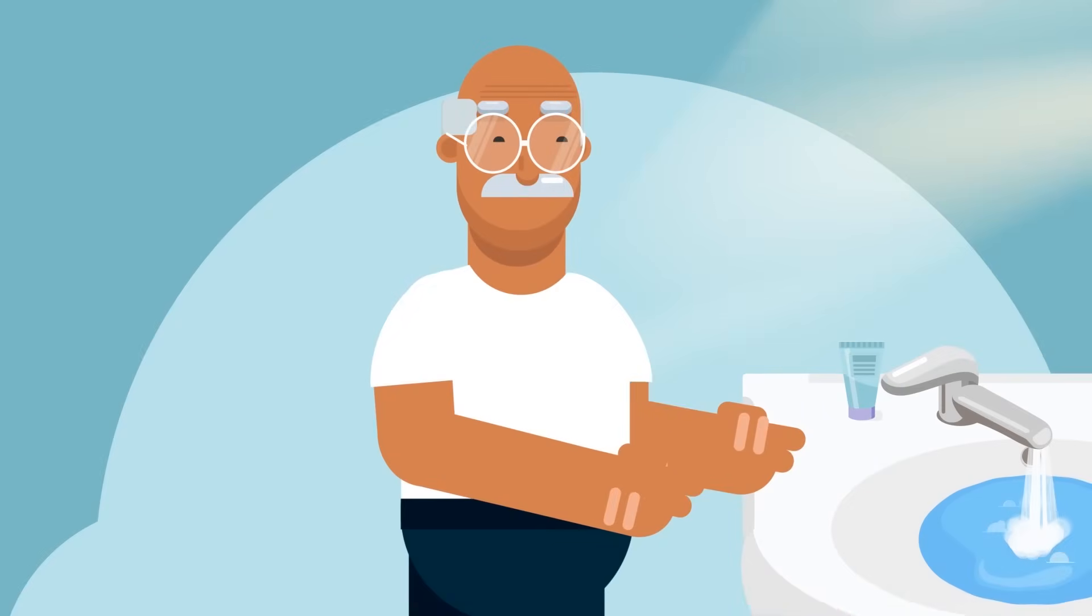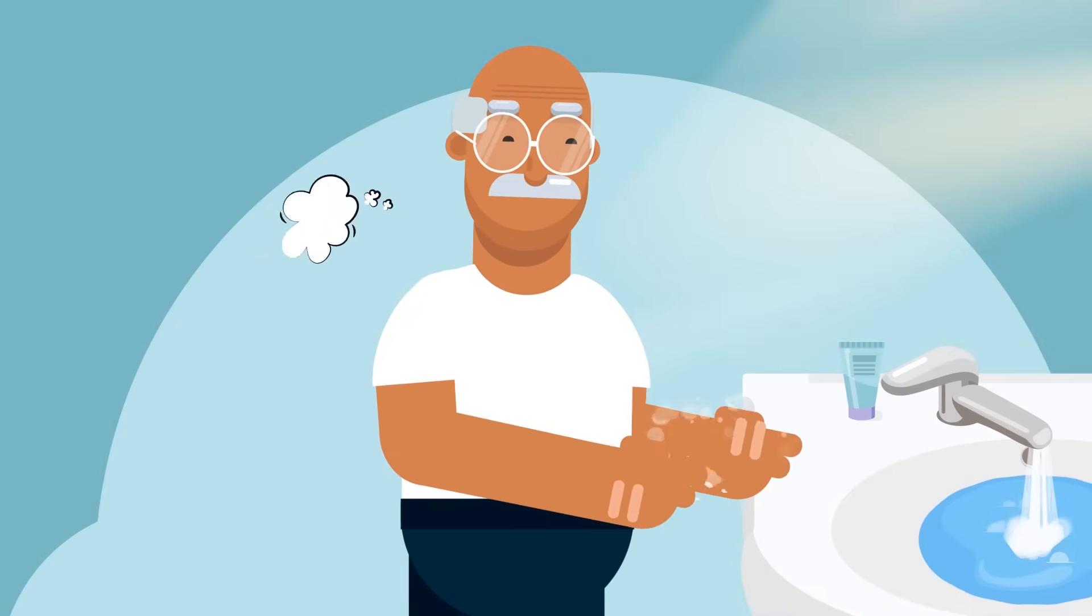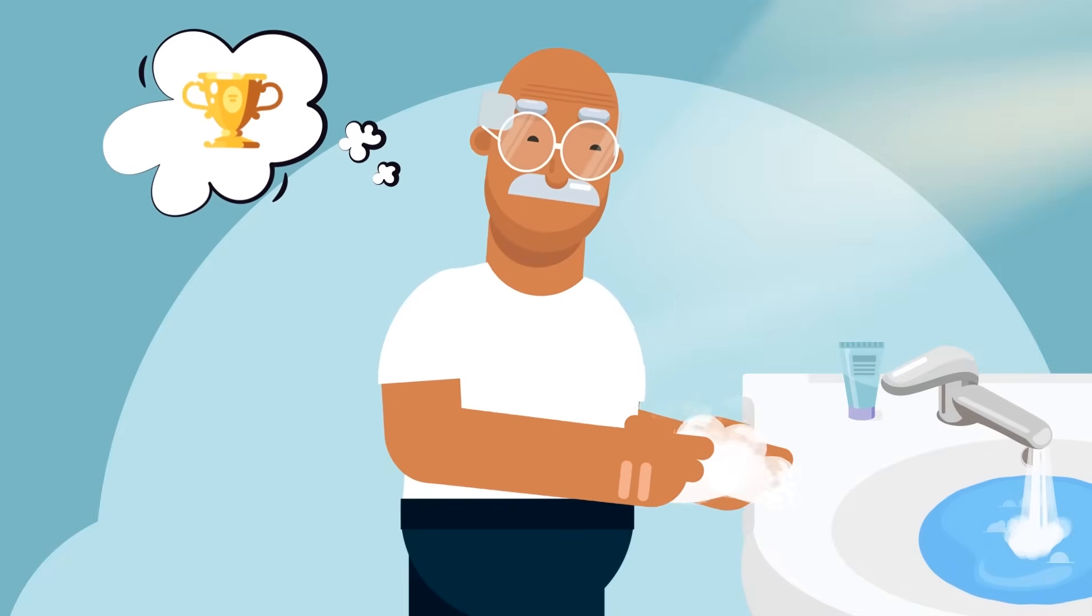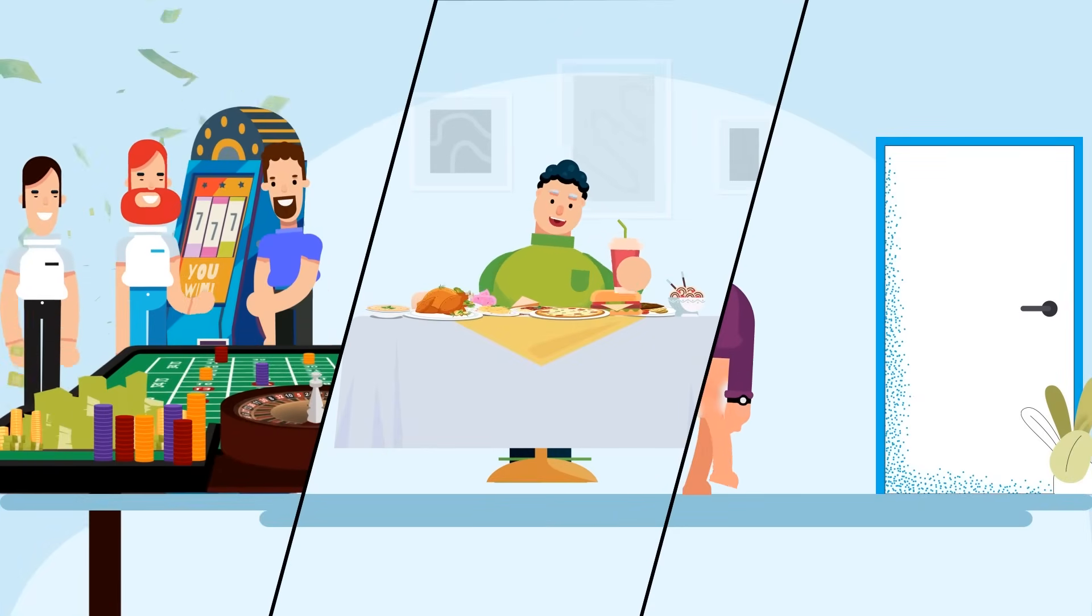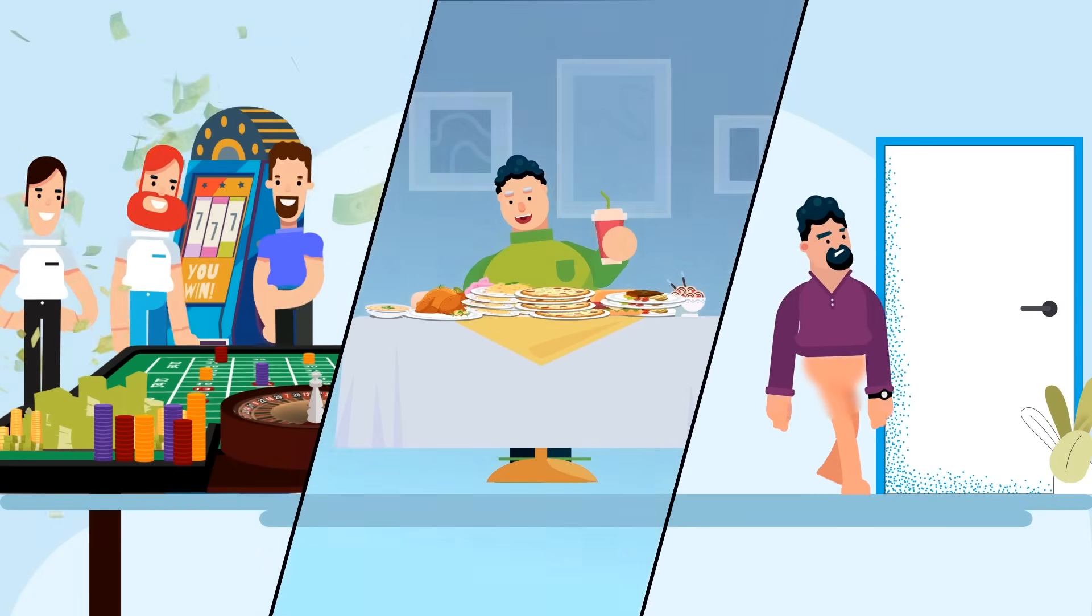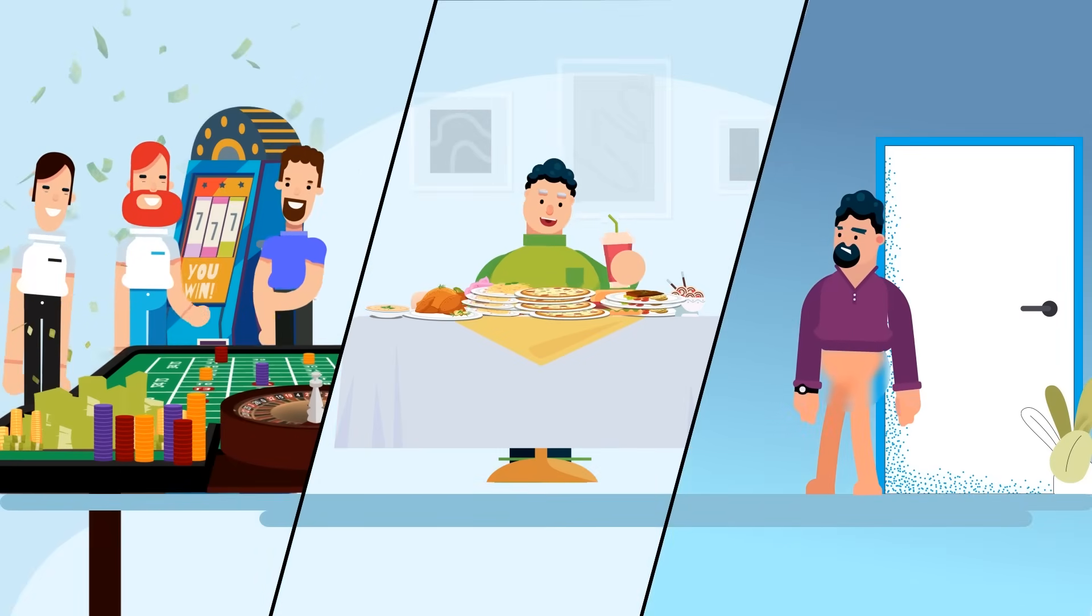Another of the worrisome side effects is compulsions. Because dopamine motivates you to repeat rewarding behavior, excessive dopamine can make it difficult to control compulsions, leading to excessive gambling, binge eating, or inappropriate sexual behavior.